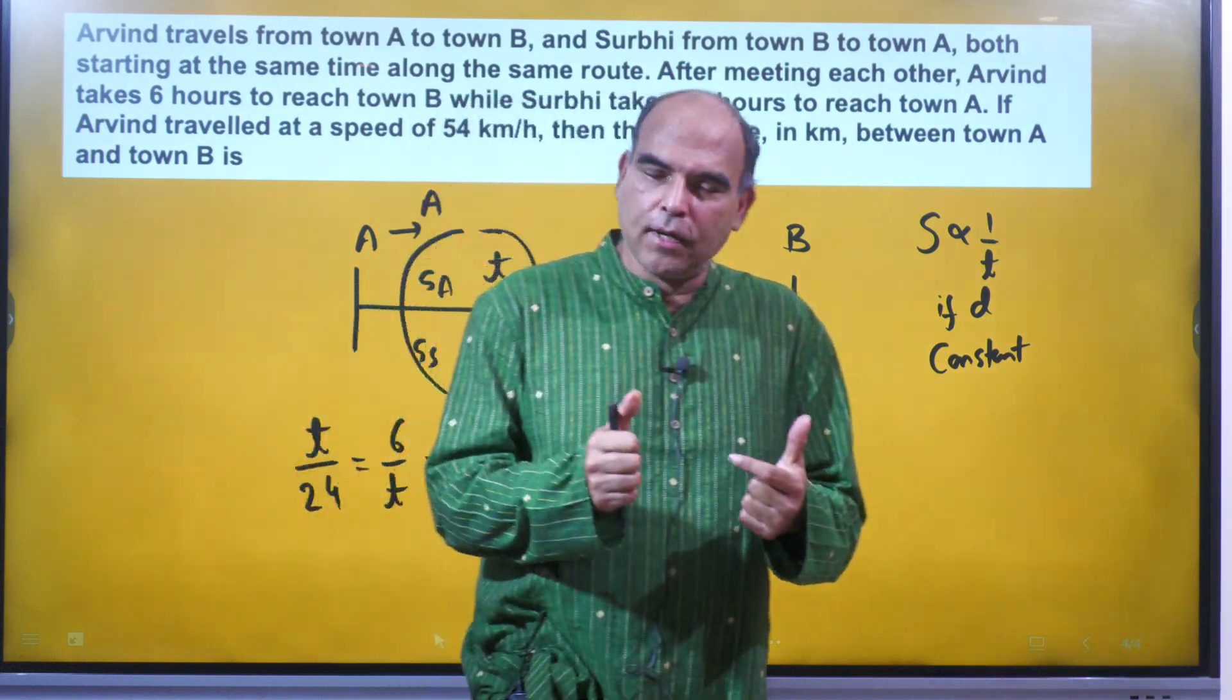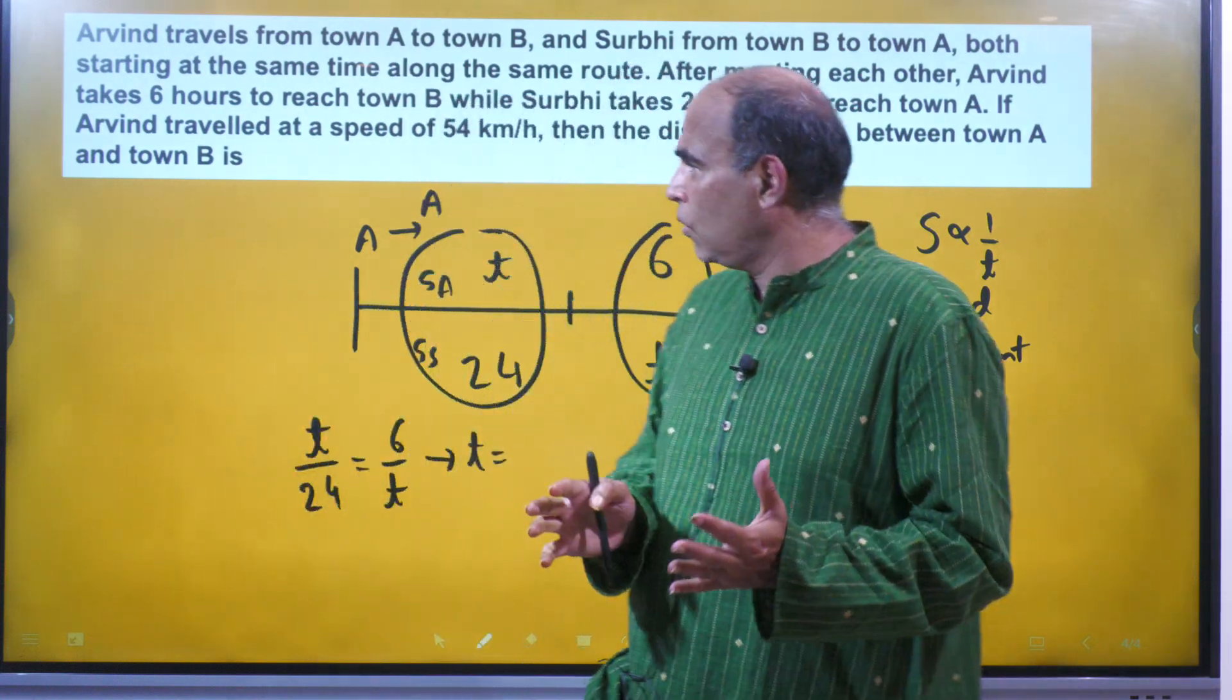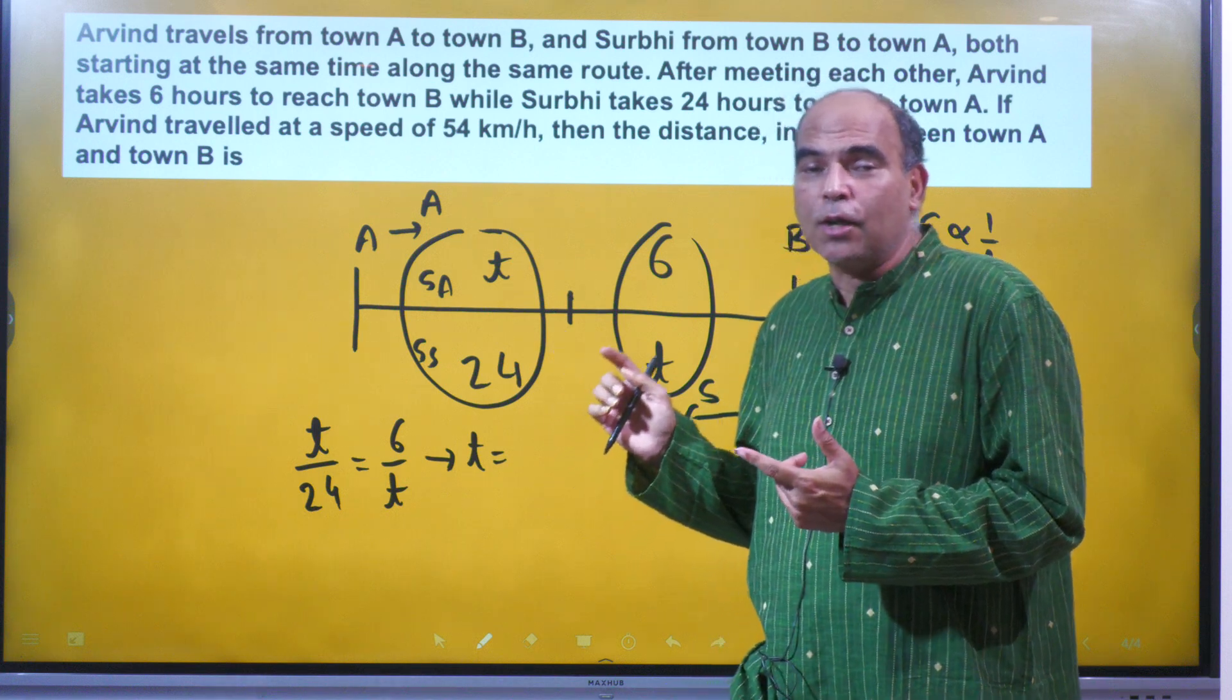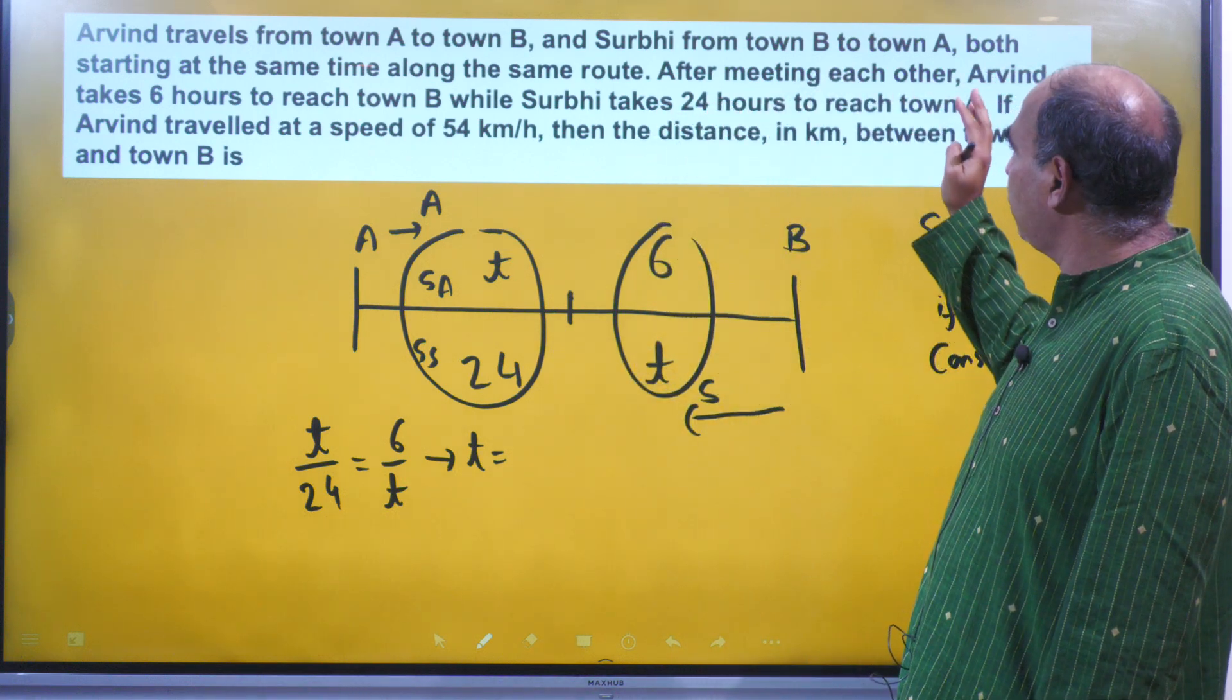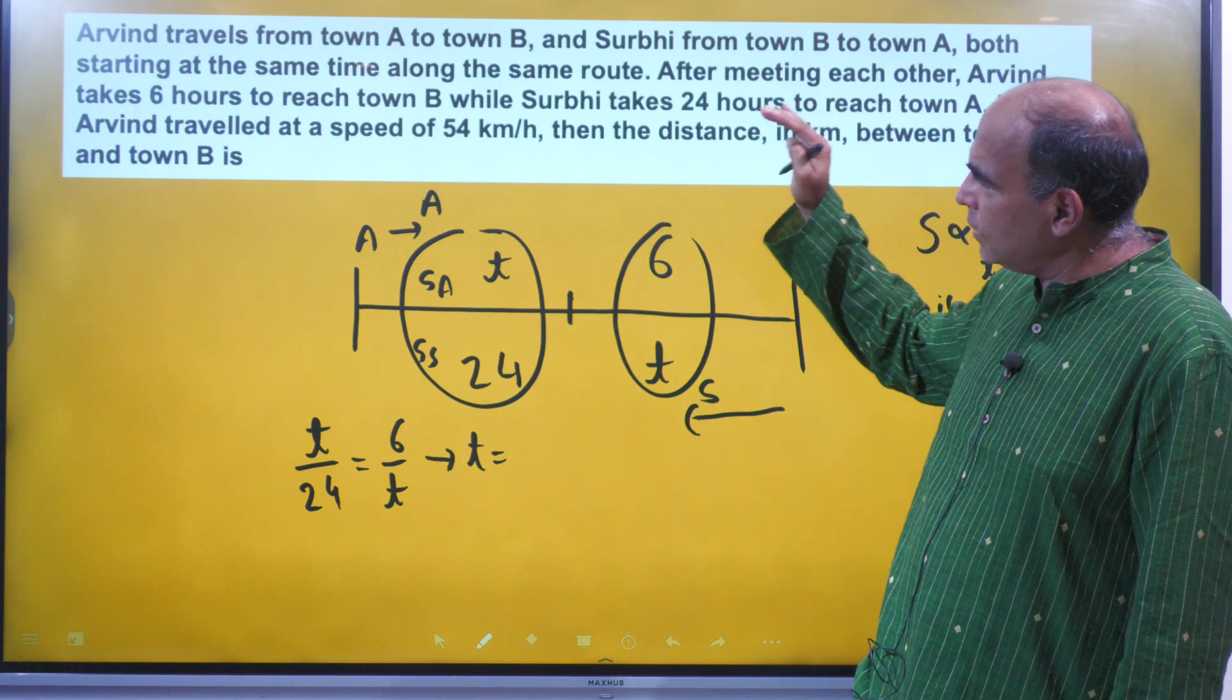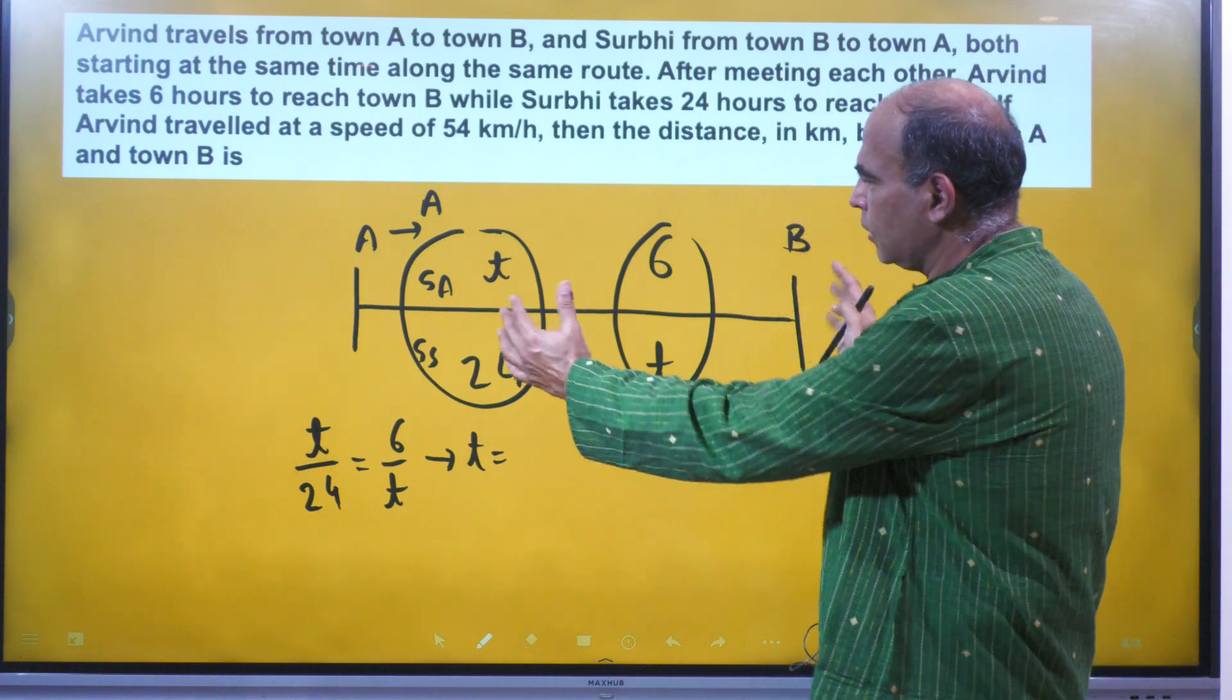Hi guys, welcome back to CAT ke questions 60-second solutions. Let's have a look. This is a time-speed-distance question. CAT 2023 ka - Arvind travels from town A to town B and Surbhi from town B to town A, both starting at the same time along the same route. So this is the story.